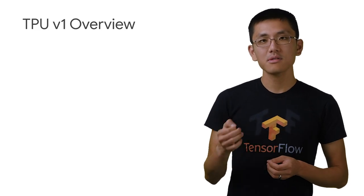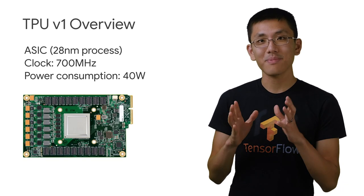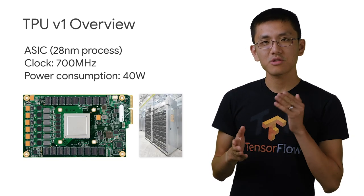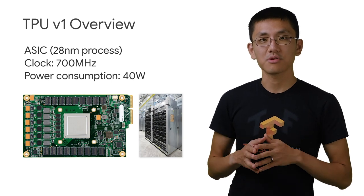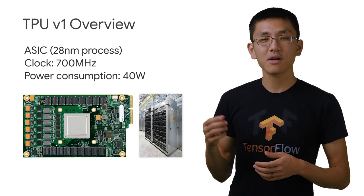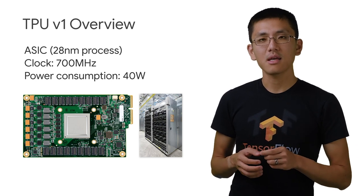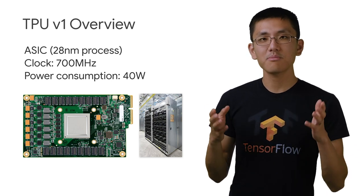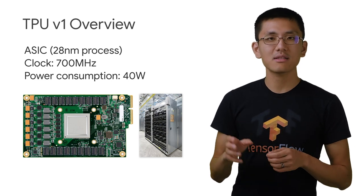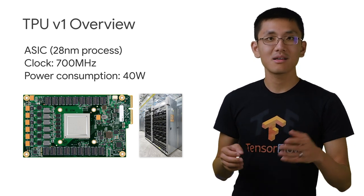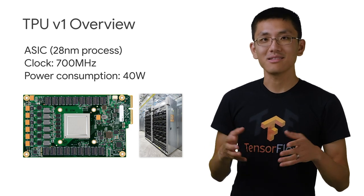The first Tensor Processing Unit was built as a PCI Express expansion card, and it was plugged straight into existing server racks in Google data centers. It had a 700 MHz clock speed and 40 watts of power consumption, and it's been in production since 2015, powering things like search, translate, photos, and of course, famously featured in the AlphaGo match in South Korea.